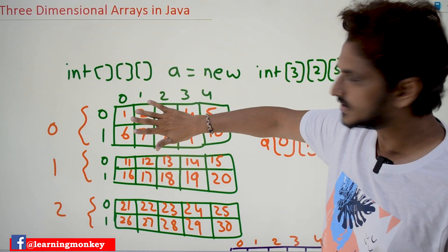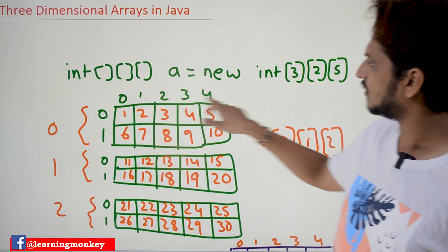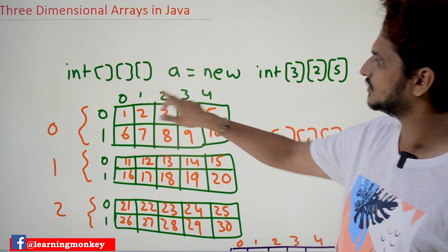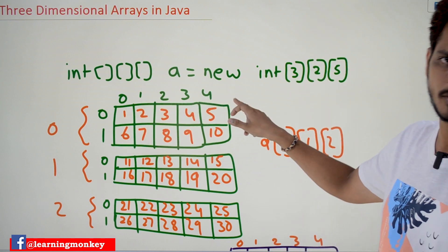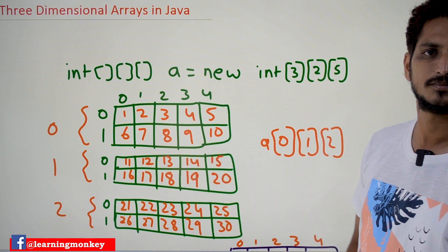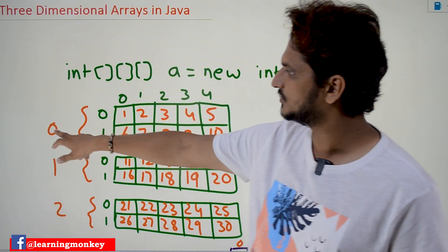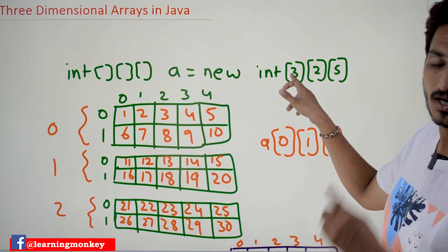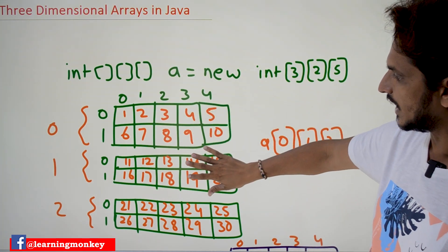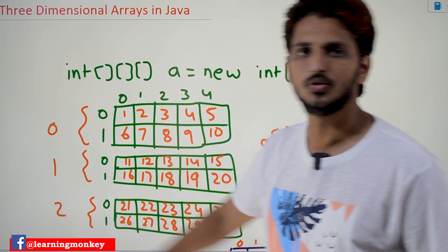A 2x5 two-dimensional array means two lines and five columns. Two lines have index zero and one; five columns have index zero, one, two, three, four. Like this, we need three of them. The first two-dimensional array has index zero, the second has index one, and the third has index two.